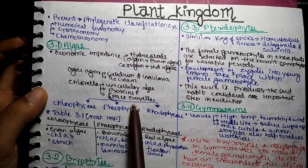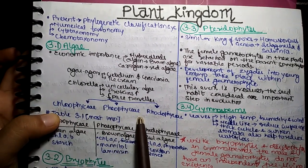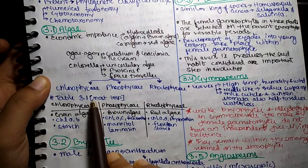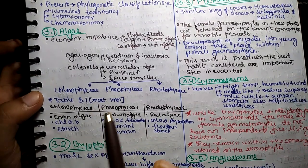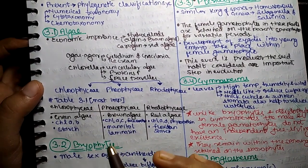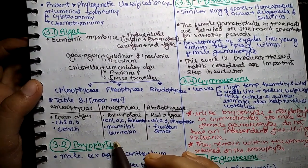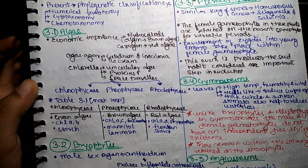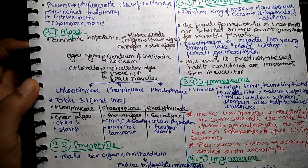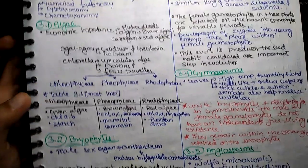Algae are of three categories: Chlorophyceae, Phaeophyceae, and Rhodophyceae. The table 3.1 given is very important. You can see it from NCERT — some of the things have been taken in the NEET exam. I will tell you about our coaching exam as well.